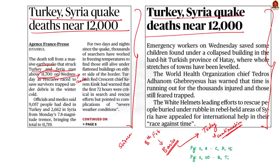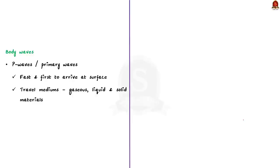Coming to today's discussion, as we saw already, earthquakes cause two types of waves. One is body wave and the other one is surface waves. Further, body waves can be divided into two types — one is P wave and the other one is S wave. Now let's see about the P waves.